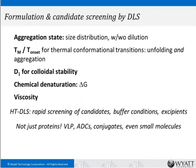To summarize the first stage — screening formulation matrices or candidates — the dynamic light scattering plate reader gives you lots of information simultaneously: aggregation state and size distribution, thermal conformation through transitions in size, identification of unfolding as well as aggregation, D1 for colloidal stability, chemical denaturation to get ΔG, and even viscosity. And as mentioned, not just for proteins — all types of biotherapeutics have been characterized in the formulation stage via the DLS plate reader.